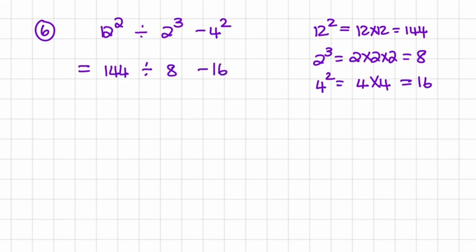Now we need to do the division before we do the subtraction, and 144 divided by 8 is equal to 18 minus 16.